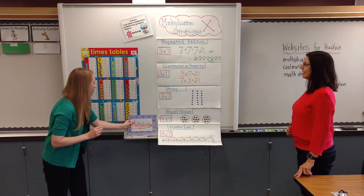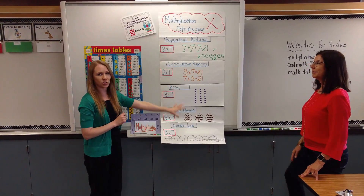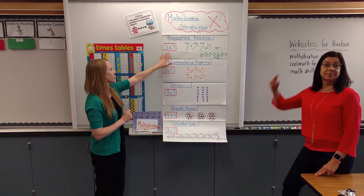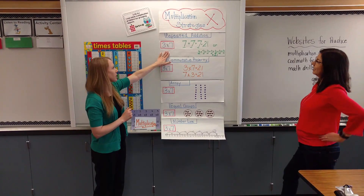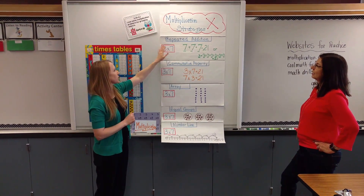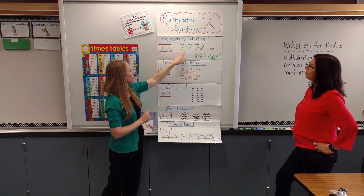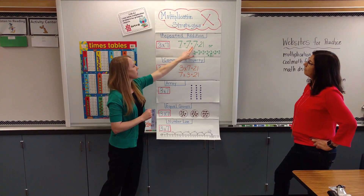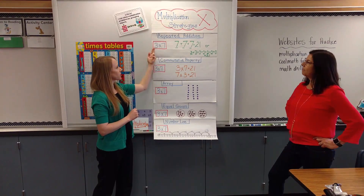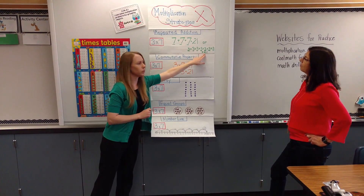It's very important at the beginning of the year we teach students all of the different multiplication strategies because we want them to understand the concept. So 3 times 7 is really 3 groups of 7. We teach them repeated addition — 3 groups of 7, so 7 plus 7 plus 7 is 21. You can also do the reverse: 7 groups of 3. Same thing, the product is 21.